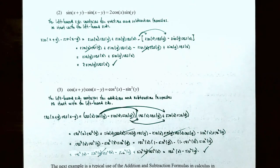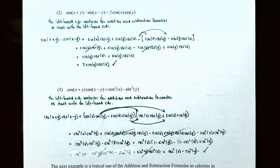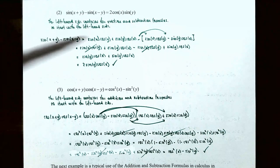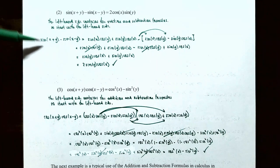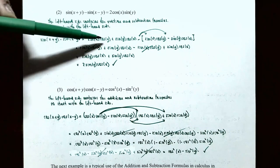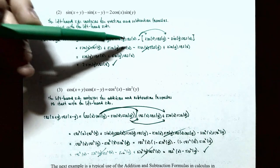Number two: let's establish this identity. Sine of x plus y subtract sine of the quantity x subtract y is equal to two times cosine of x times sine of y. On the left-hand side we have both the sum and difference formulas for the sine function. We'll start with the left-hand side. Sine of x plus y, using the addition formula, is sine of x cosine of y plus sine of y times cosine of x.